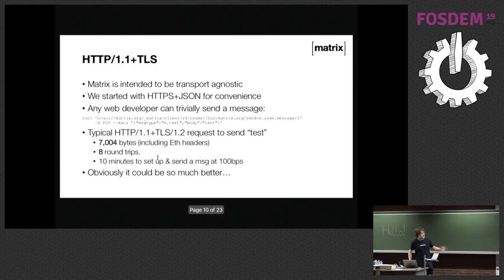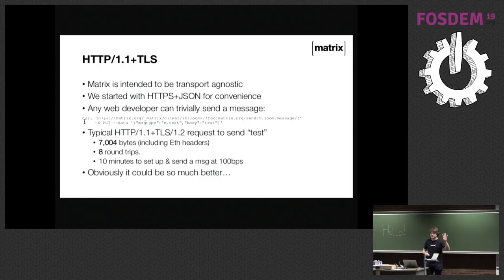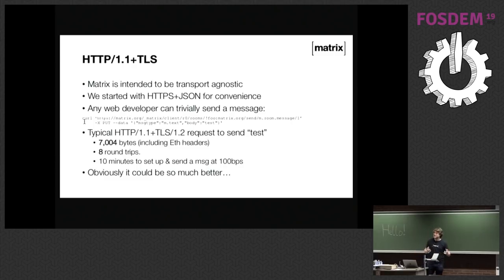So we look at HTTP 1.1 with TLS, which is what we do by default today — anybody can just do a curl. That curl to send a message to a Matrix room took 7,000 bytes including Ethernet headers, and eight round trips in order to send the four-byte payload 'test'. The TLS handshake, certificate check, etc. expands it to 7K. At 100 bits per second, that is 10 minutes to do a single HTTP request. So that's not going to work.